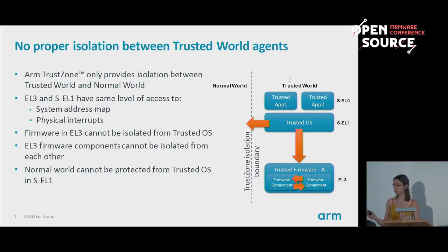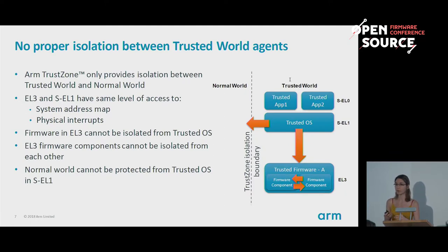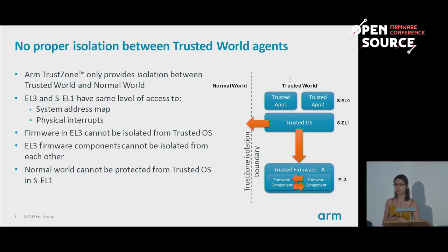As you can see in this diagram, Trusted Firmware-A runs at the highest privilege level, EL3, and the trusted OS typically runs at Secure EL1. There is no proper isolation between EL3 and Secure EL1 — both have basically the same level of access to the memory space and direct access to physical interrupts. As a consequence, the firmware in EL3 is never really isolated from the trusted OS, and components inside the firmware are not isolated from each other.